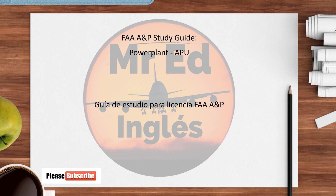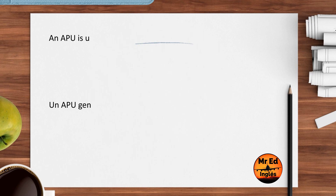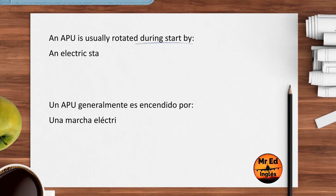FAA A&P Study Guide, Power Plant, by Mr. F. An APU is usually rotated during start by an electric starter.